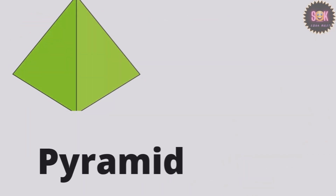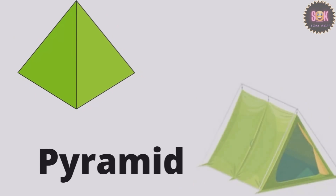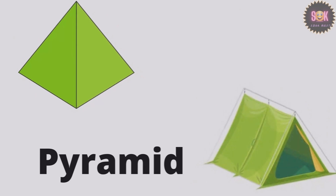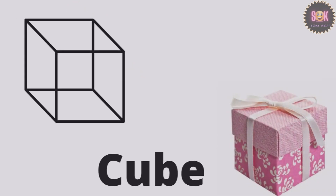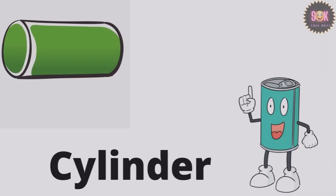This is a pyramid shape. This is a cube shape. This is a cylinder shape. This is an oval shape.